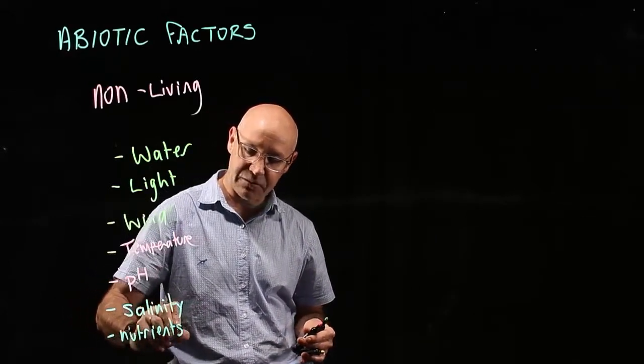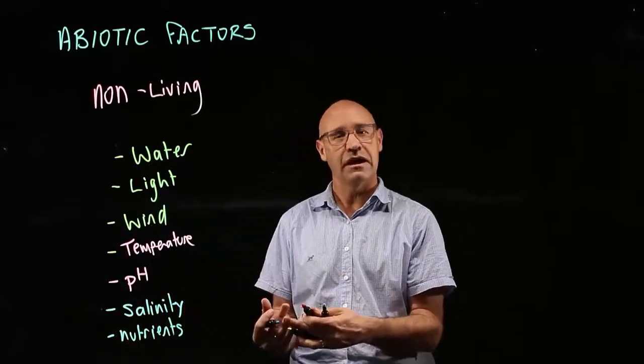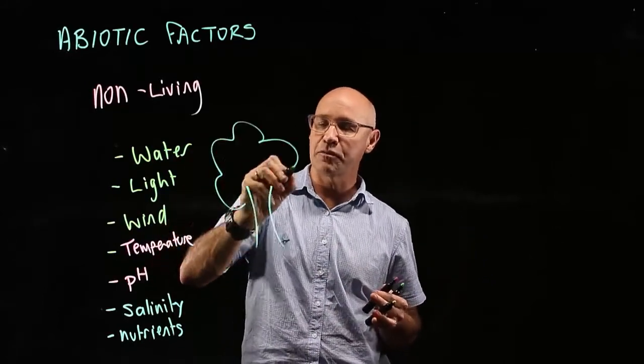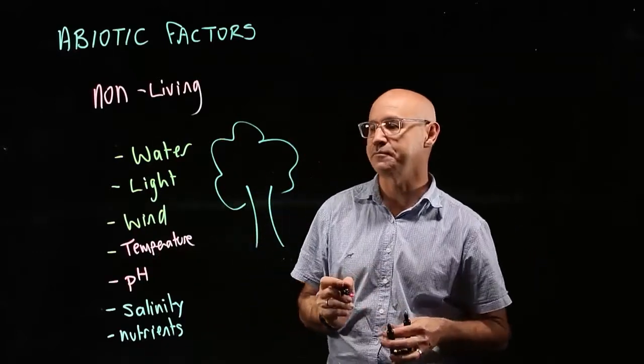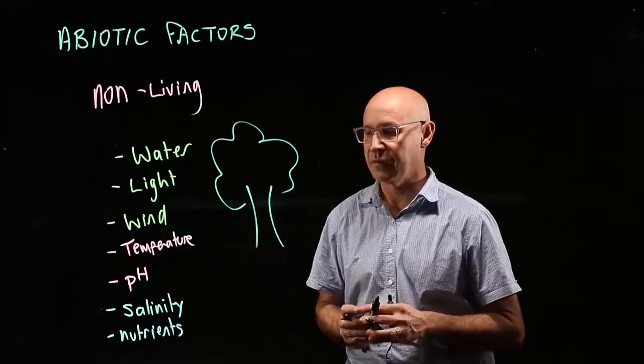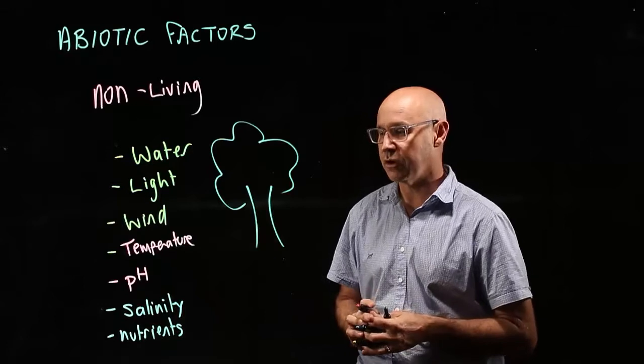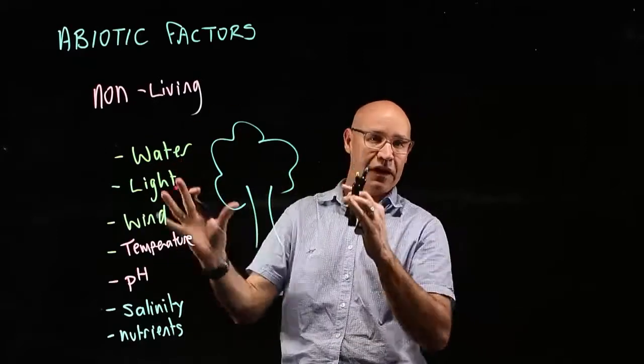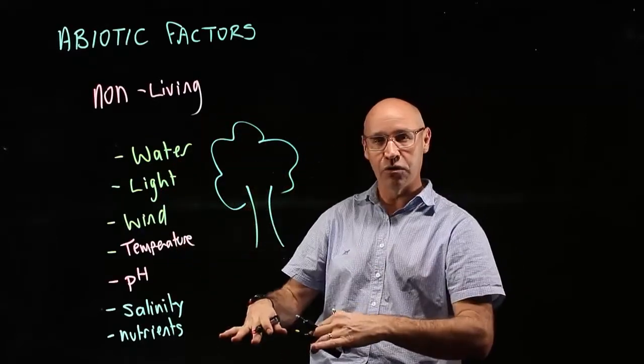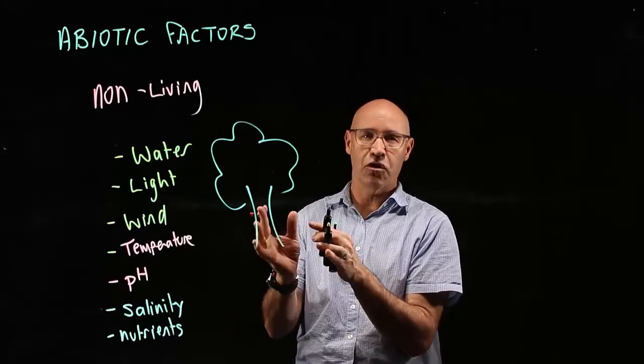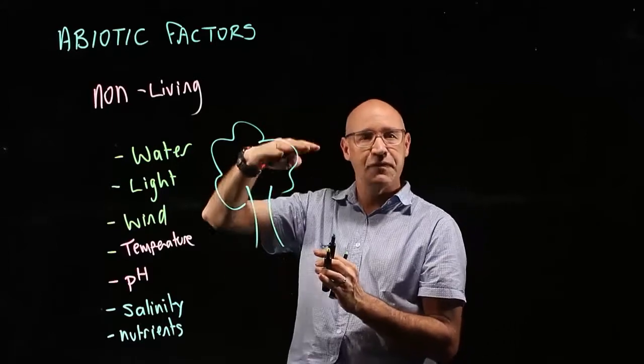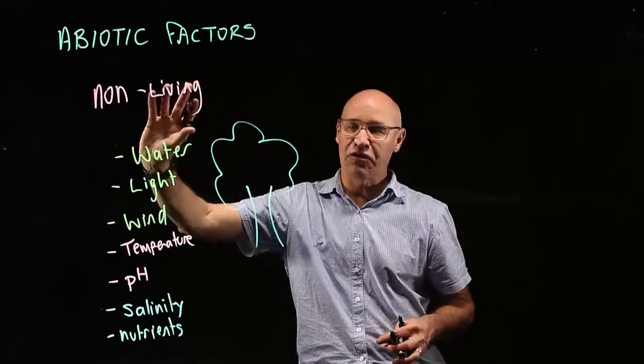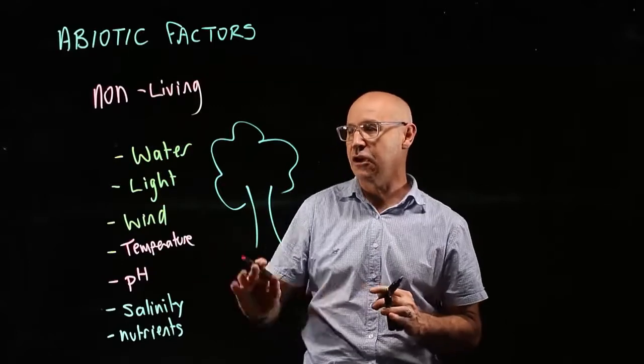If you're a plant, for example, the amount of nutrients in the soil will dictate how quickly you grow. Plants need light from the sun, water through their roots, access to nutrients, soil of appropriate pH, and appropriate temperature. If it's too cold, reactions in the plant go too slowly; if it's too hot, it might cause damage or evaporation. Wind can help with seed dispersal or pollination. These non-living factors influence the survival of this tree.